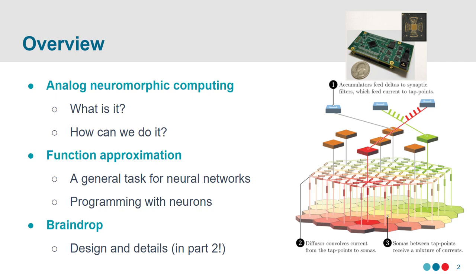So, analog neuromorphic computing — what is it? How can we do it? And how does that lead us to this idea of function approximation as a way of programming with neurons? This provides a general framework for getting these chips to do useful things and to treat them kind of like programming, similar to how we would program digital chips.